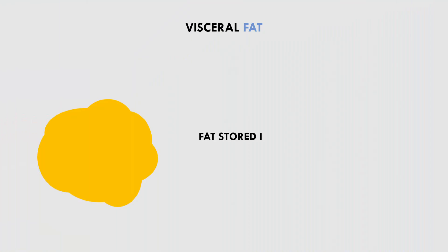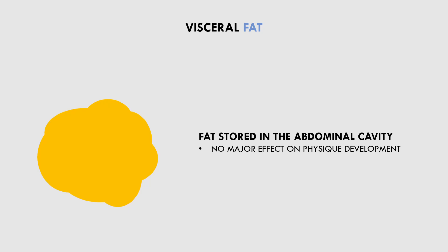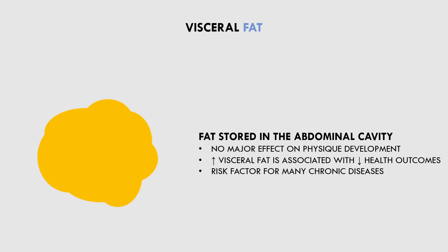We also have another type of fat called visceral fat. This is not fat located underneath the skin, but rather it is stored in the abdominal cavity around the organs. While this type of fat doesn't necessarily impact the look of a physique or athletic performance, it has significant implications for health. It is quite clear that visceral fat is associated with negative health outcomes, so high levels of visceral fat are a general risk factor for many chronic diseases.